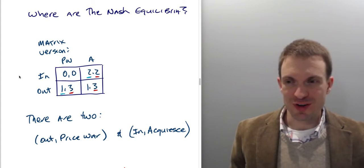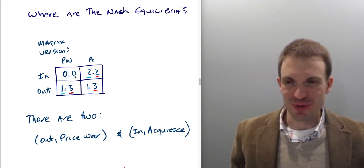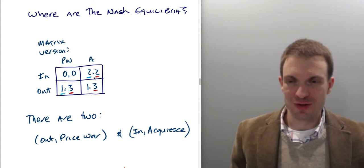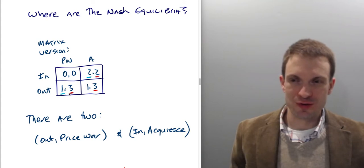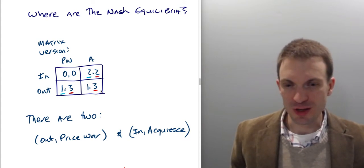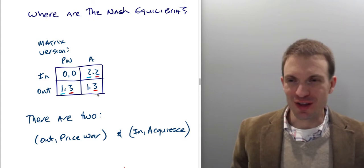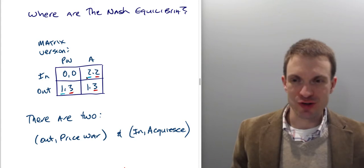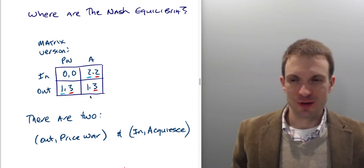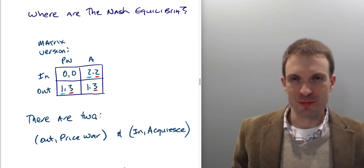Now for the incumbent: if the entrant enters, the incumbent gets zero from price war and two from acquiesce, so they acquiesce. If the entrant stays out, price war and acquiesce are equally good, so we underline both. We therefore have two Nash equilibria: 'out, price war' and 'in, acquiesce' — but we may not feel good about both of them.